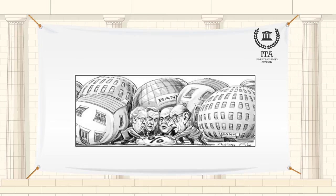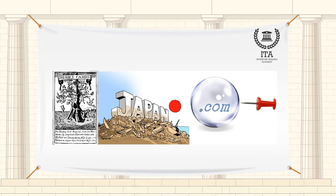Central banks attempt to keep an eye on asset price appreciation and take measures to curb high levels of speculative activity, which may make prices vulnerable to a sudden correction. The term bubble was first used in 1720 in reference to the South Sea bubble crisis.